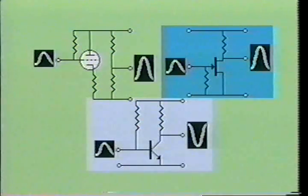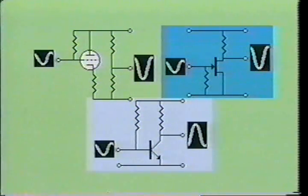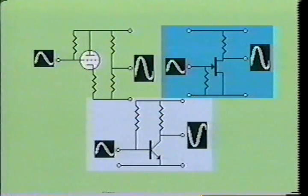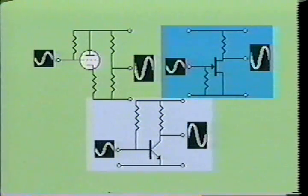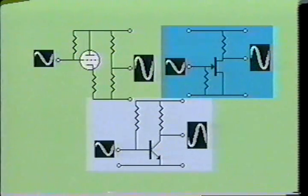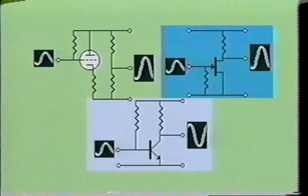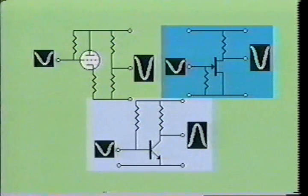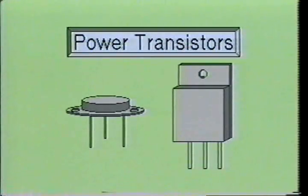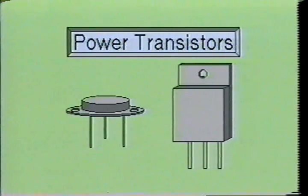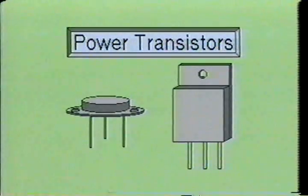Today, most general purpose amplifiers use semiconductor devices to provide amplification. The bipolar transistor and field effect transistor will perform the same function as the vacuum tube, but they do it much more efficiently, using far less current for the same amount of amplification. Semiconductor devices used in power amplifiers differ from those used in voltage amplifiers, both physically and electrically. Power amplifying devices are physically larger and designed to operate with higher voltage and current levels than those required for smaller signal amplifiers. Other than this, the basic concept of both types of amplifier circuits are quite similar.